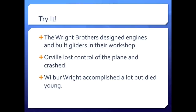Now let's look at the last sentence. 'Wilbur Wright accomplished a lot, but died young.' What is the compound predicate in this sentence? The compound predicate is 'accomplished a lot and died young.' There are two verbs in this sentence, 'accomplished' and 'died.' Both of those verbs share the same subject, Wilbur Wright, so they make a compound predicate.